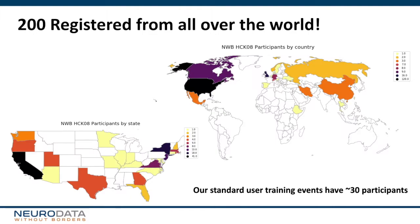As of making this slide, we had 200 registered participants from all over the world, which has been fantastic because we really haven't had this kind of global reach before — we usually have about 30 participants. While most of our attendees are from the United States, we have people from China, Russia, Ethiopia, Thailand, all over Europe, and many different US states. We're really excited and hope this continues to grow as more people learn about and start to use NWB.